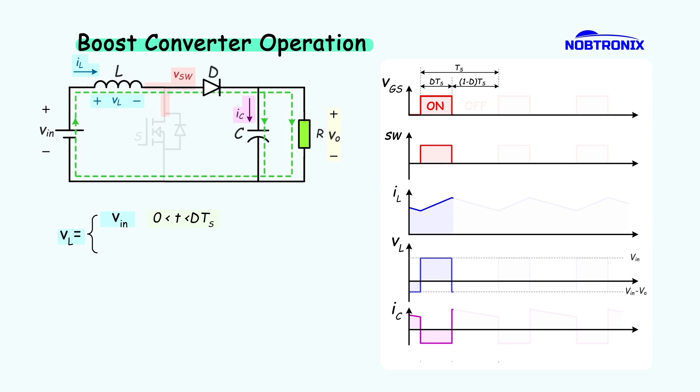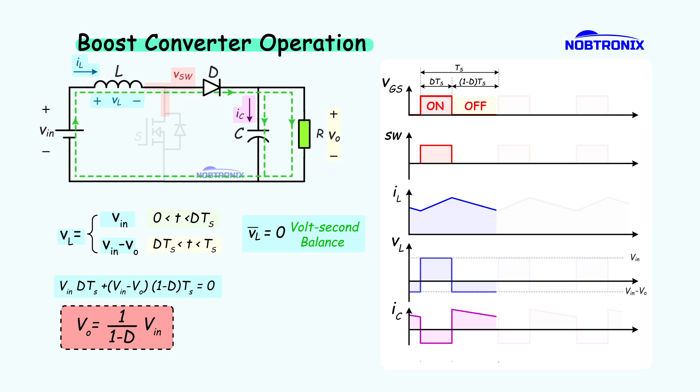When the switch turns off, the inductor sends current through the diode to charge the capacitor, and its current drops linearly. The voltage across the inductor now equals the input voltage minus the output voltage. Using volt-second balance again, we get a formula that links input and output voltage.